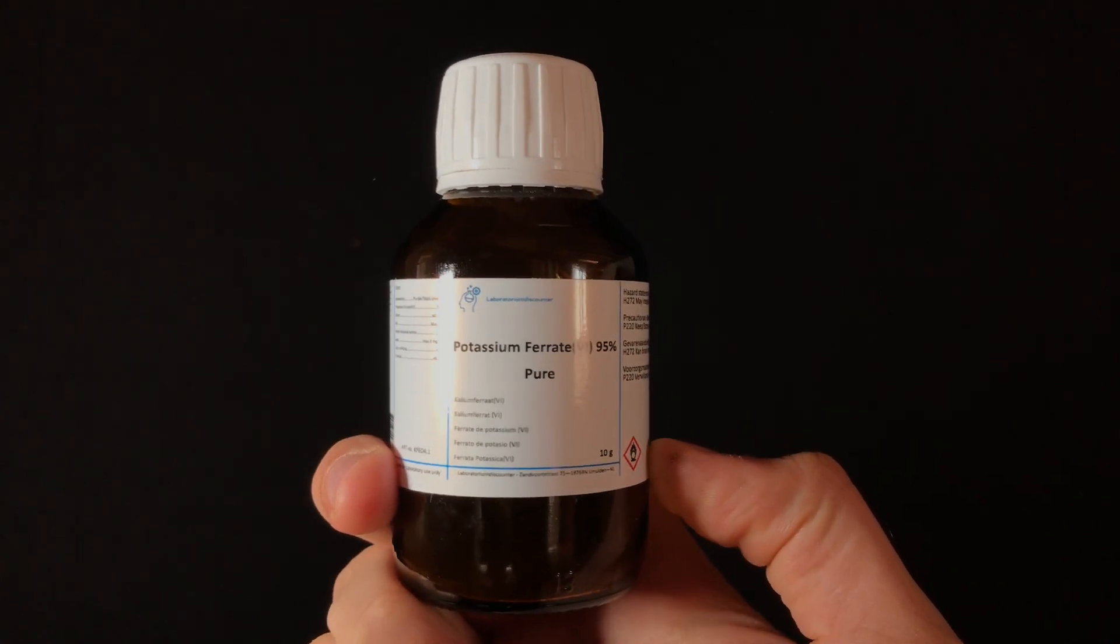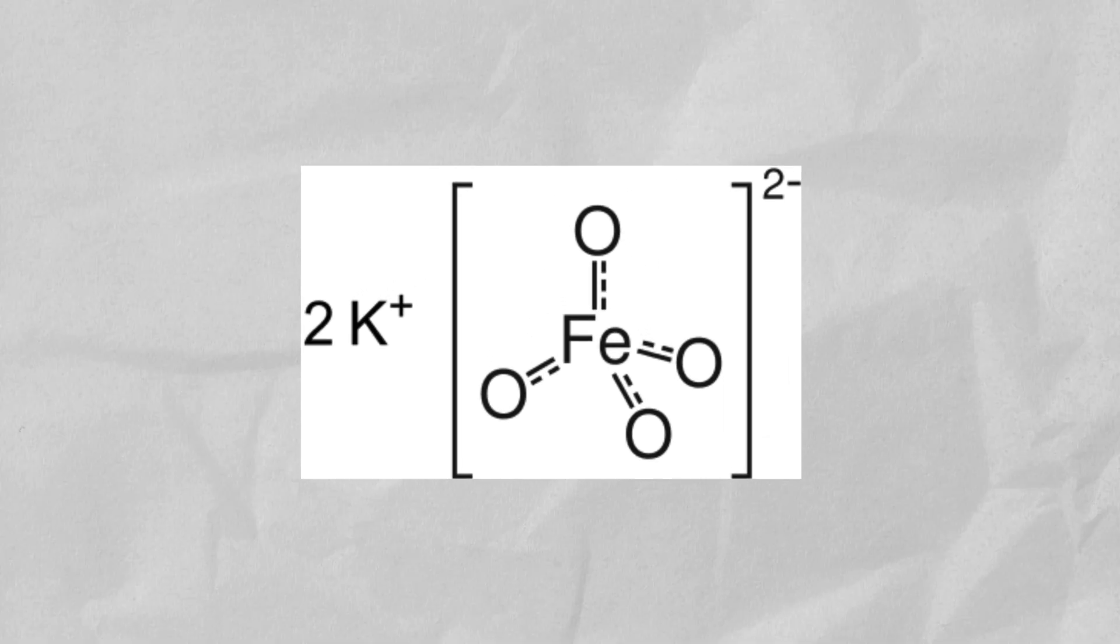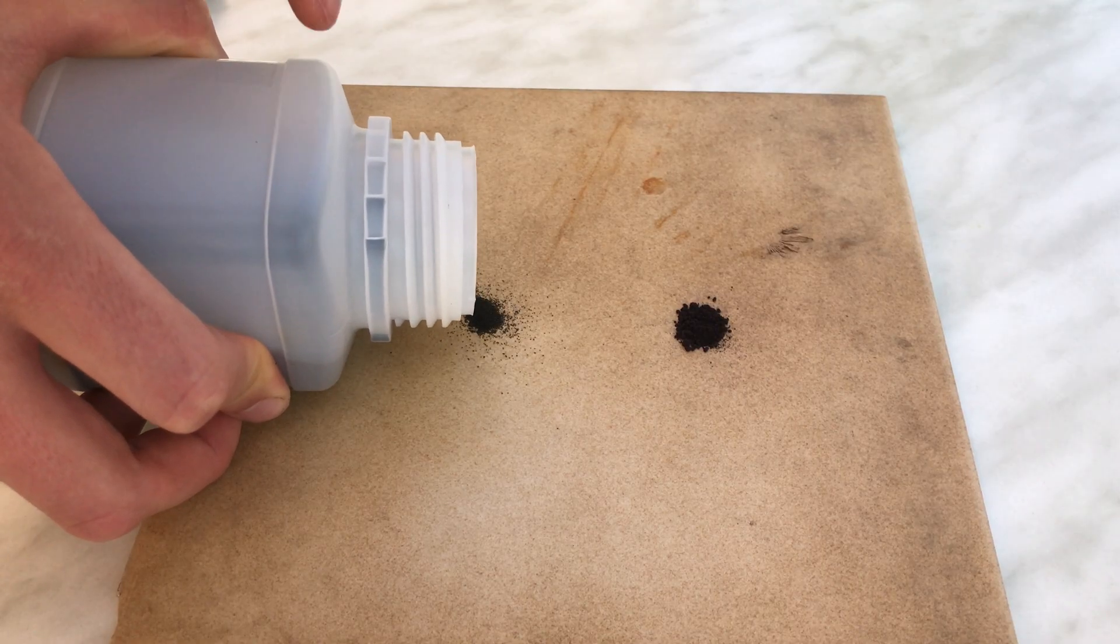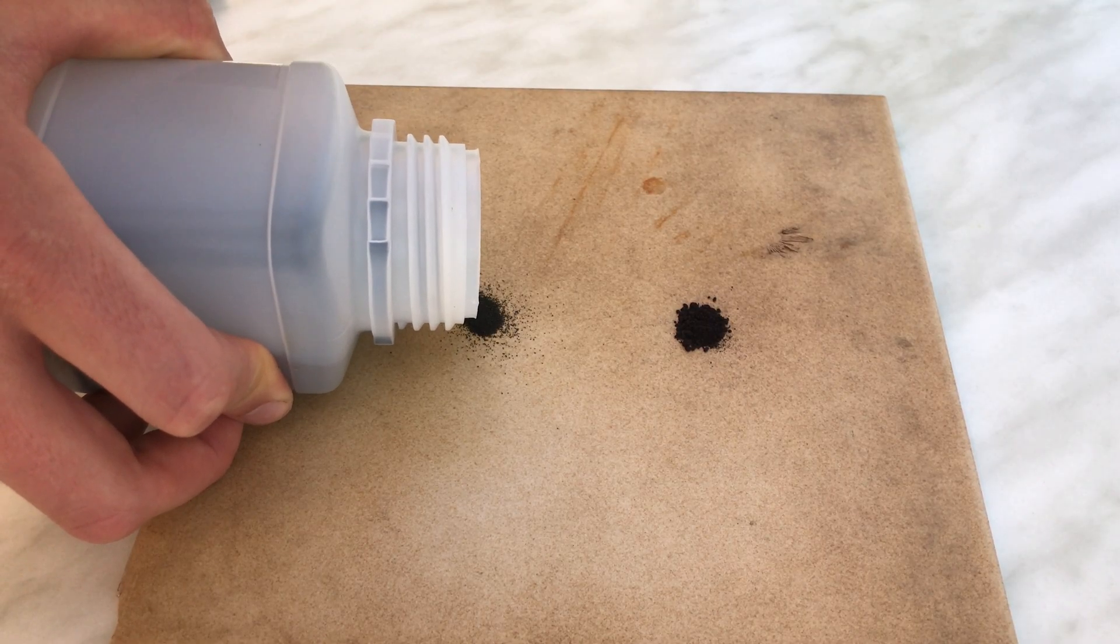Today I'm going to show you a very interesting oxidizing agent. This is potassium ferrate. The molecule of potassium ferrate looks similar to another oxidizing agent you likely know, potassium permanganate. But the interesting part is that potassium ferrate is a much stronger oxidizing agent than potassium permanganate.